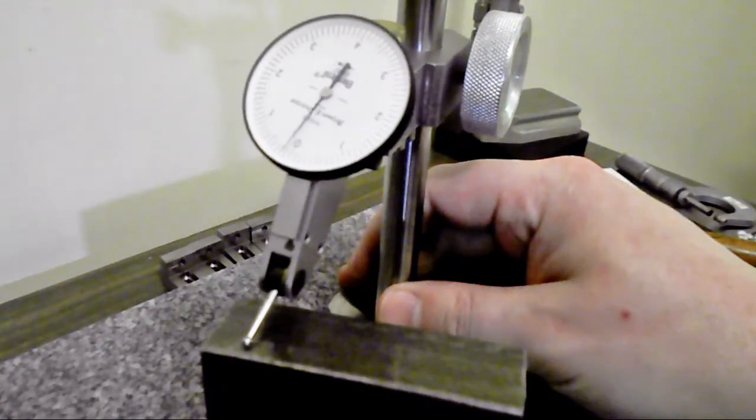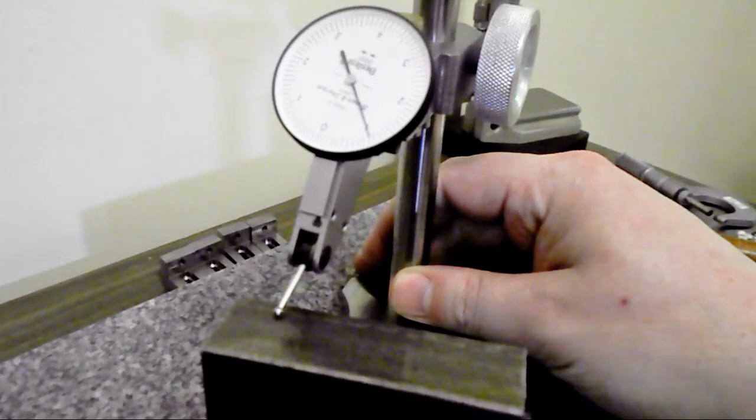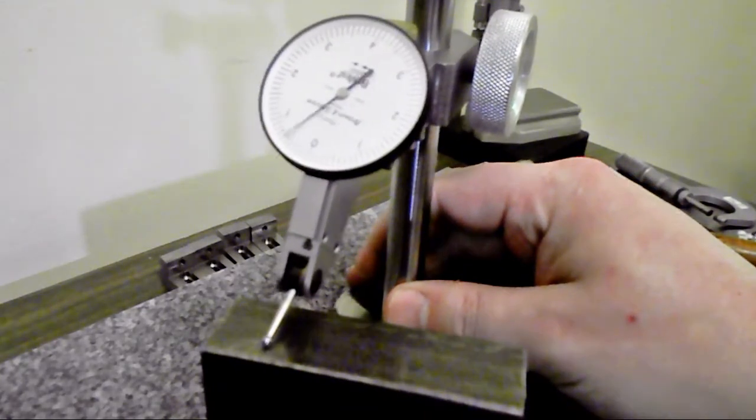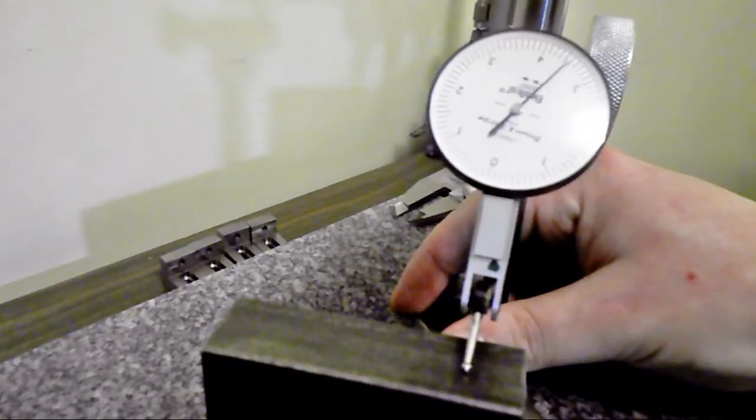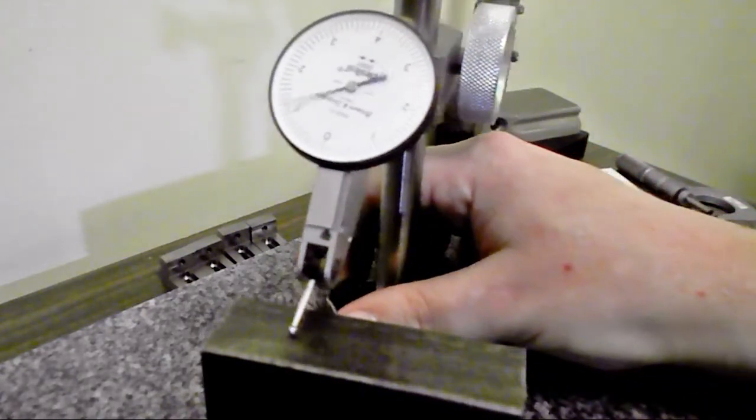You can see there, it's a little bit high in the middle, and then it drops down pretty significantly. So it just has a bubble in the middle. And then, from side to side, it's pretty far out of whack, maybe four thousandths or so.